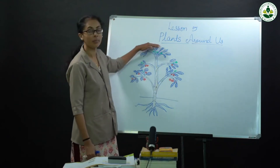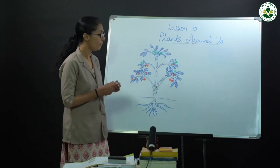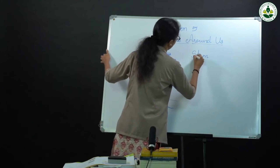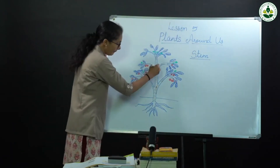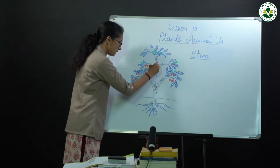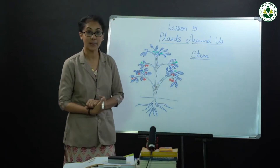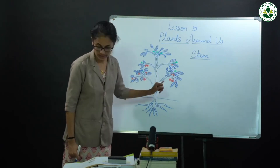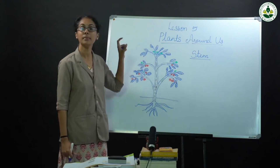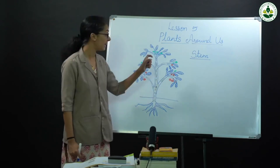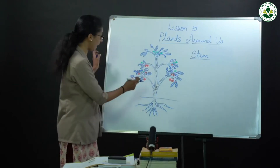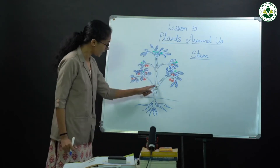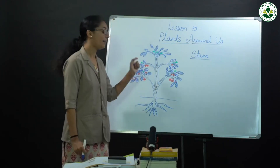The first part of the shoot system is the stem. The stem of a plant supports the plant. It supports the other parts of the plant, like leaves, fruits, and flowers.